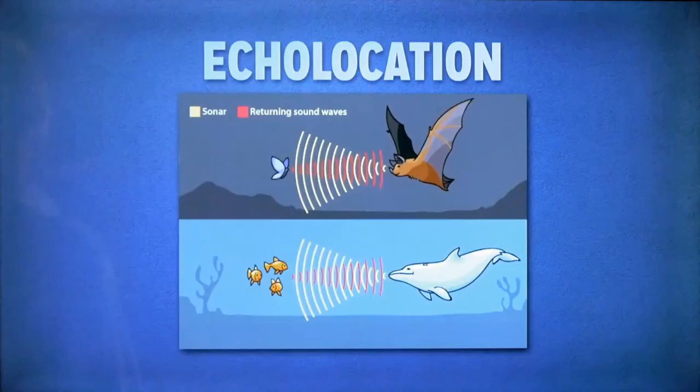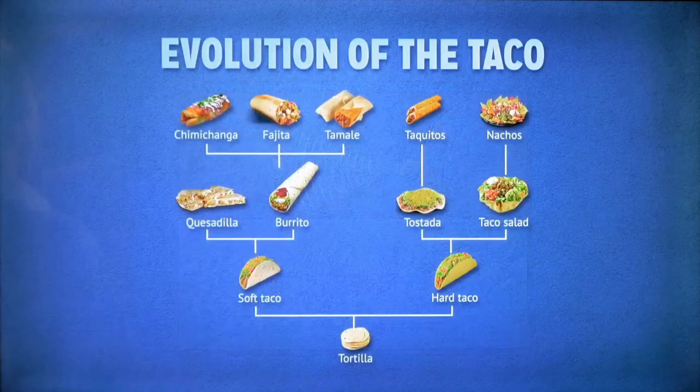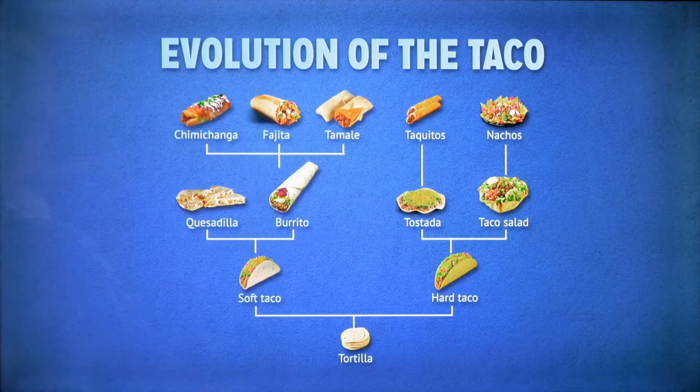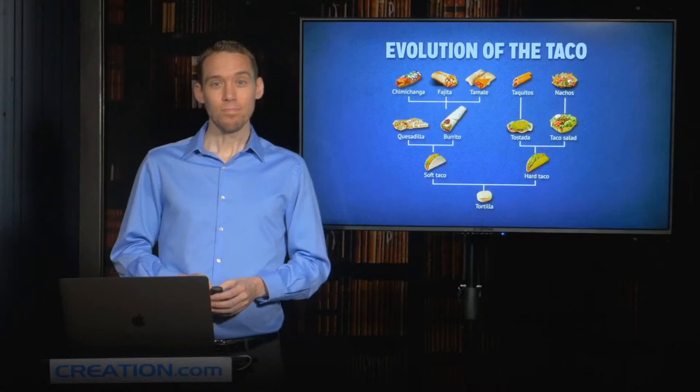Frankly, to use similarities as an argument for evolution doesn't fly even logically because designed objects exhibit many of these same patterns of similarity. Dump out all the utensils in your kitchen drawer, for example, and you can arrange them into a nested hierarchy. Patterns of similarity, finding things that are more closely similar than others and you sort of arrange them into an evolutionary tree. It doesn't prove that those objects were not designed. Far from it. The same thing we can do with Mexican food, for example. Here's the evolution of the taco, if you will. Just because designed objects exhibit similarities does not prove one evolved from the other.